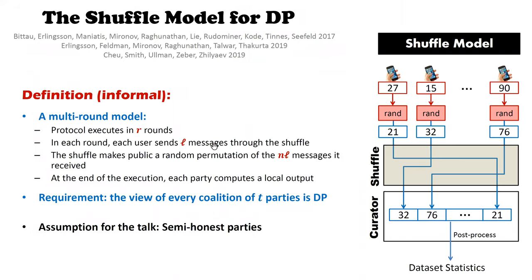Here is the formal definition. We consider protocols that proceed in rounds — say R rounds — where in every round, every user submits L messages to the shuffle. So with N users, there are N·L messages per round. The shuffle randomly permutes all messages, and then everybody gets to see the outcome. We require that the view of every coalition of up to T parties is differentially private — even after seeing the shuffle outcome, a coalition learns basically nothing about the input of any user outside it.